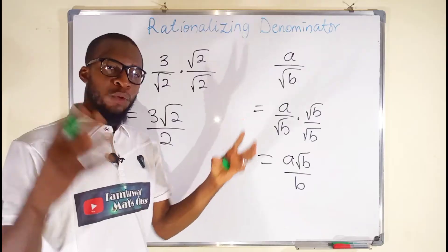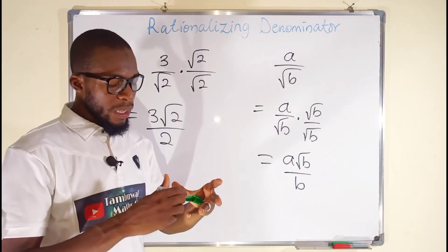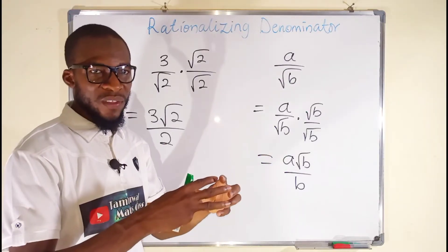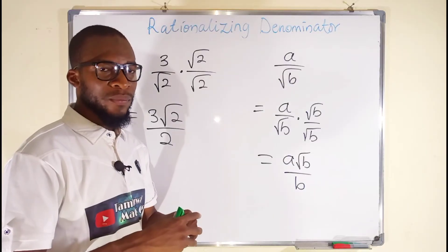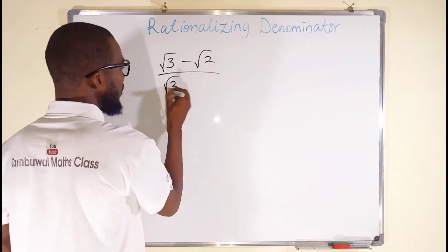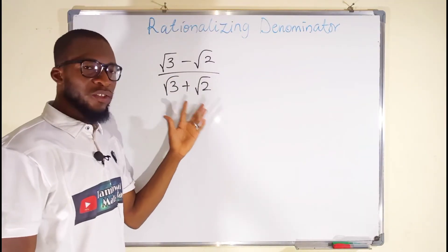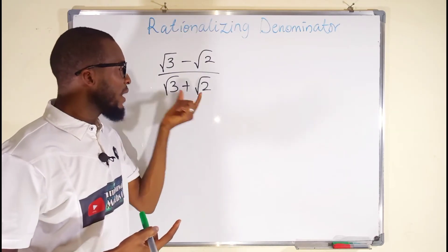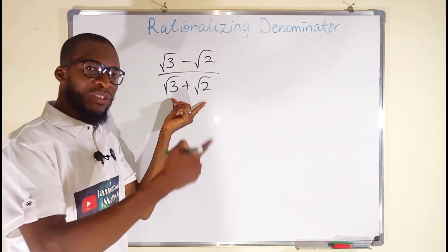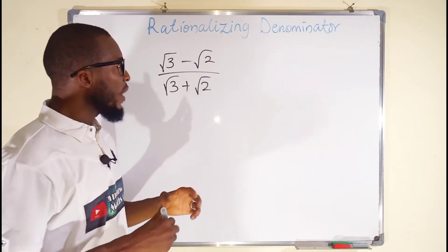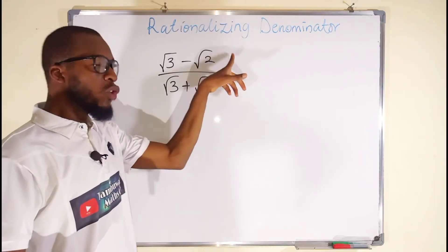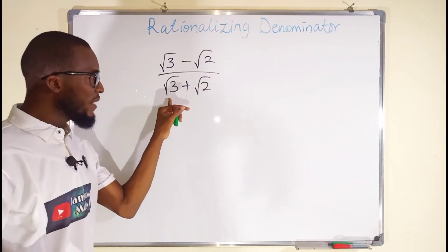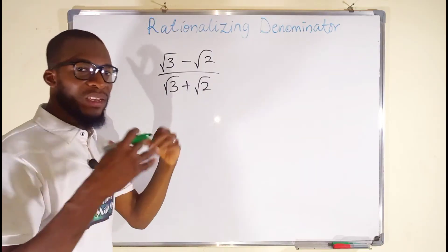So what about if we have a binomial surd at the denominator? In our previous lesson we learned about conjugates — if you multiply two conjugates together you are going to obtain a rational number. So now let us test another example. You can see the denominator is a binomial surd, and if you multiply a surd by its conjugate it is going to be transformed into a rational number. So we can go ahead and multiply the bottom and the top by the conjugate of the denominator.